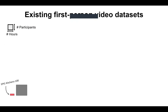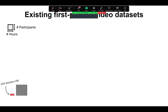To give you a sense of the scale: if you carve out a shape on an axis showing hours of video content and number of participants, the previous best was Epic Kitchens at about 100 hours and 45 subjects. Even if you took all past egocentric video datasets and put them in a block, you'd get something in that range.